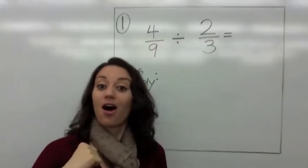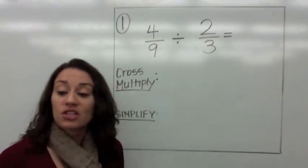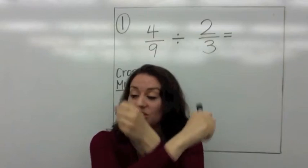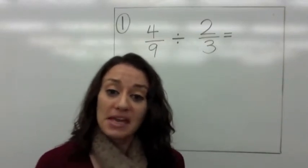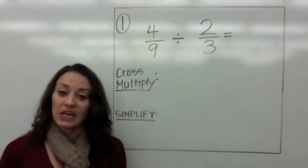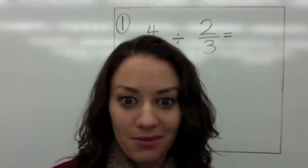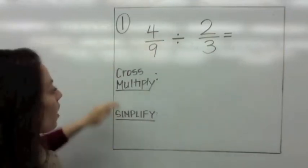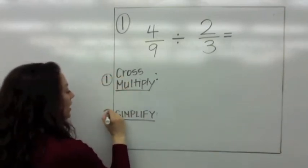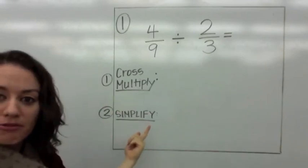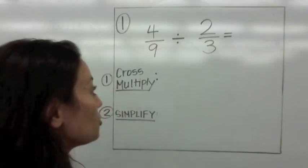Okay, so we're dividing fractions and we're using the shortcut of cross multiplication. The shortcut means when you cross multiply from the very beginning, you do not have to multiply by the reciprocal. I've written down two steps: the first step is cross multiply, and the second step is simplify.